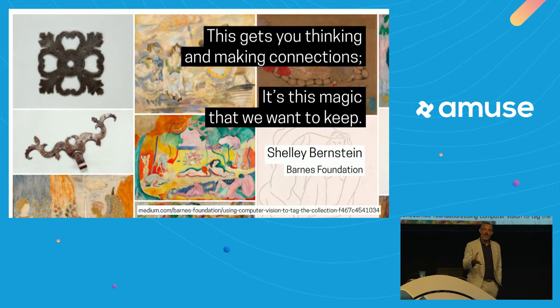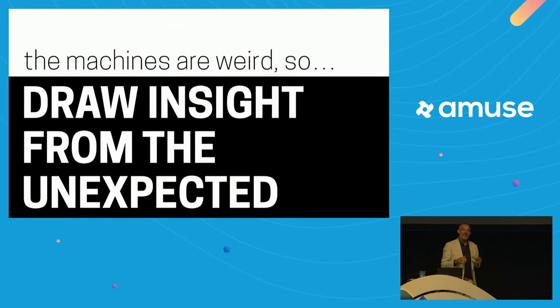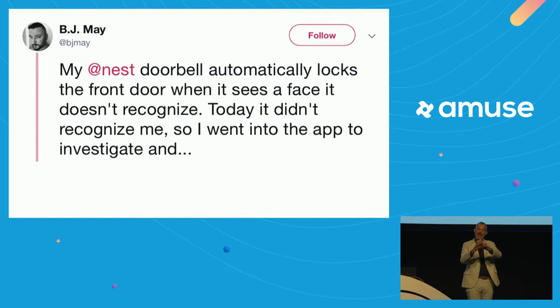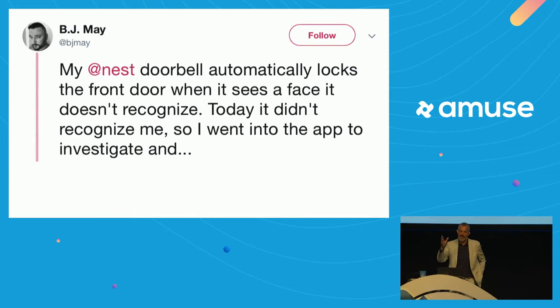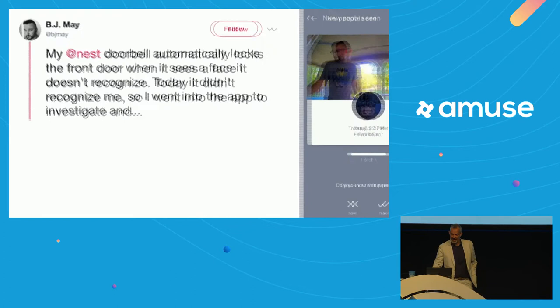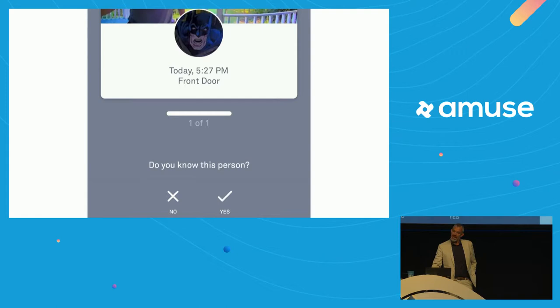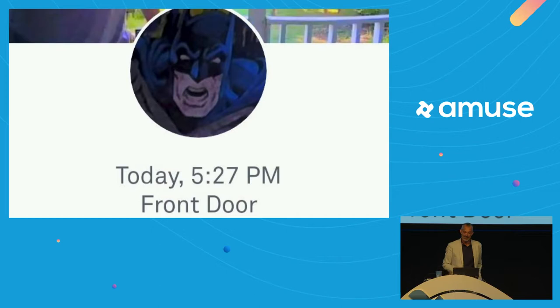Because the machines are weird and have a perspective we might not apply, there is creative friction we can draw from — we can take that weirdness and turn it into an asset. On the topic of unexpected visitors: BJ May has a Nest doorbell with a camera, and hacked it to automatically lock when the Nest doesn't recognize someone. One day it didn't recognize him and locked him out — what it had found was a photo of him looking quite angry. Pretty good call, actually.